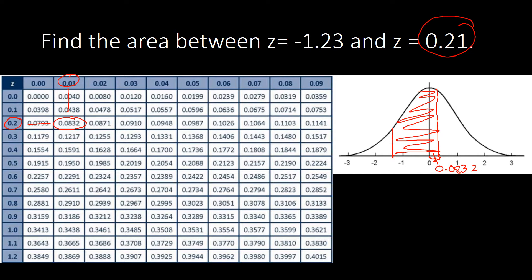Next, negative 1.23 is connected to 0 by this area. What we look for on the z-table will be this area only. Locating that: 1.2 on the column and 3 on the header — that will be the last digit on the header. Moving down and moving across, we get the area as 0.3907. That is the area on this side, which is connected to your 0.